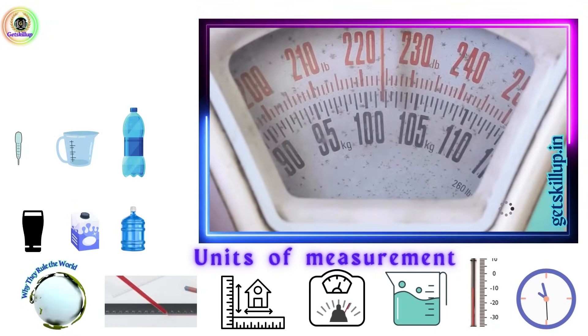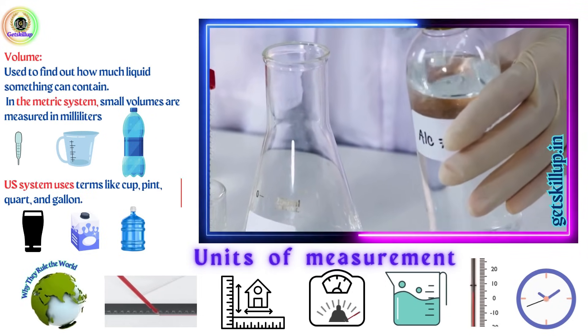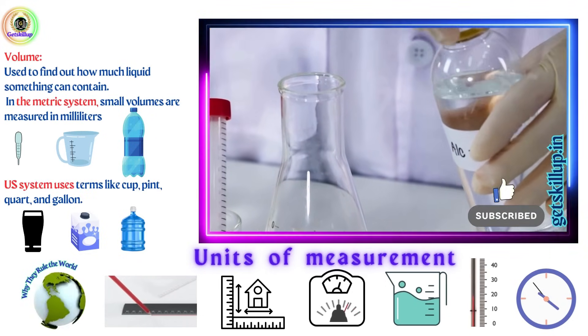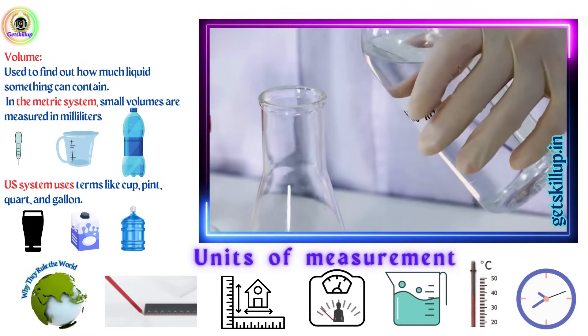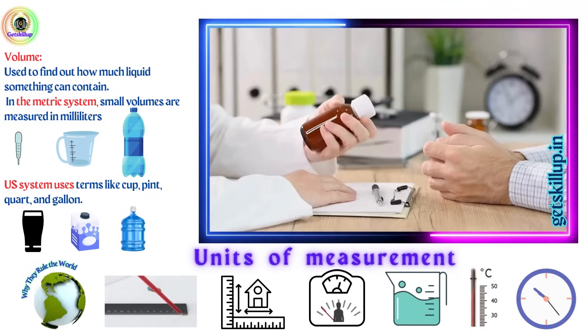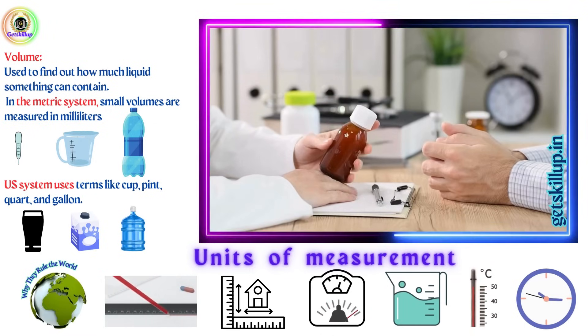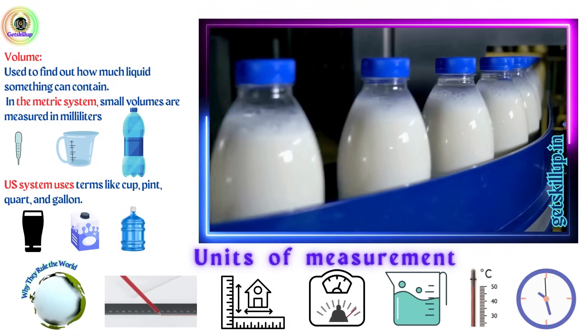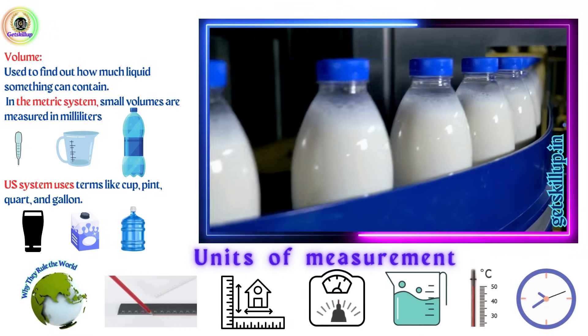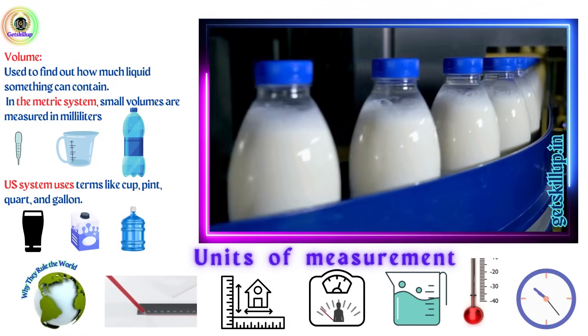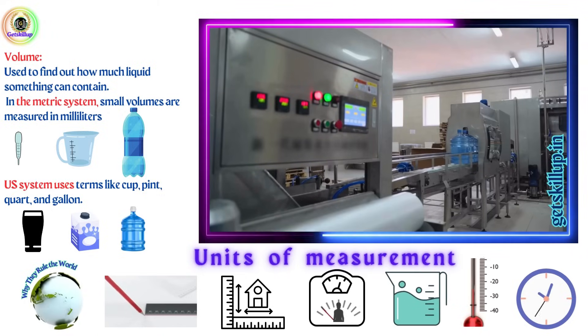Next, let's talk about capacity or volume, used to find out how much liquid something can contain. In the metric system, small volumes are measured in milliliters, like the amount of medicine you take, while larger volumes are measured in liters, like for milk or juice. In contrast, the US system uses terms like cup, pint, quart, and gallon.